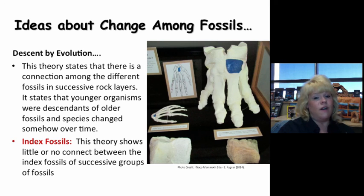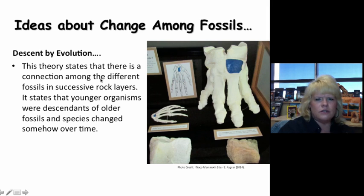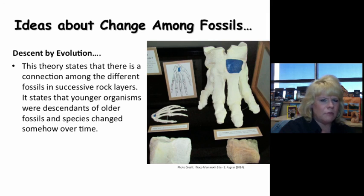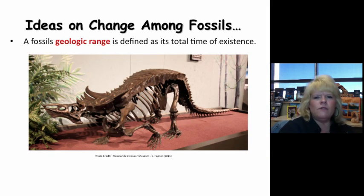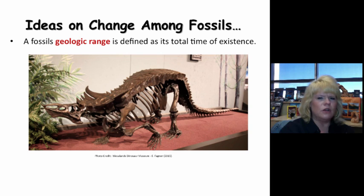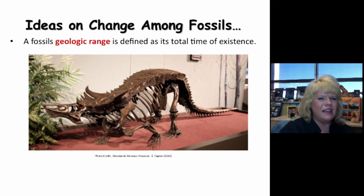In the thought process of descent by evolution, you could say that index fossils do have a connection. This theory is more on the right track — maybe not perfectly so, but it's getting there, understanding change over time. We know so much more about evolutionary change now than we did even 20 years ago with the discovery of genetics. Now that we've looked at the assumptions and requirements of index fossils, let's talk about geologic range — understanding that fossils have a designated range, meaning a start and a finish in the rock record.